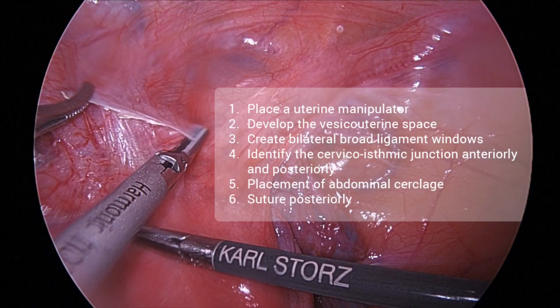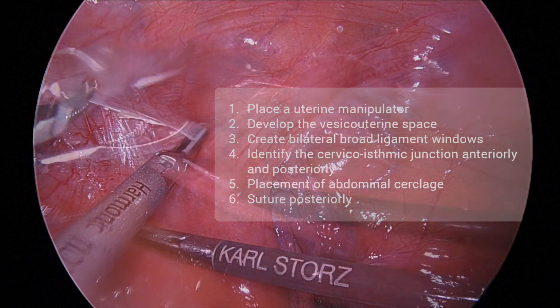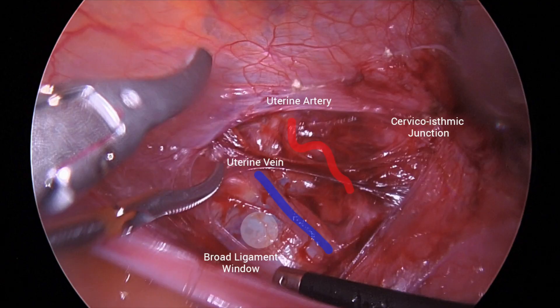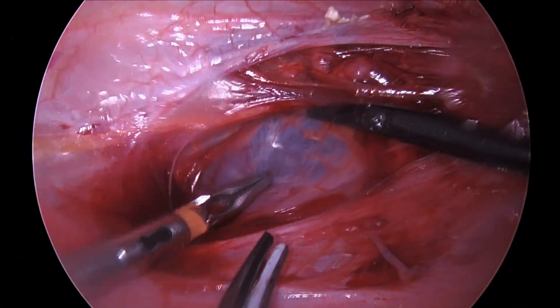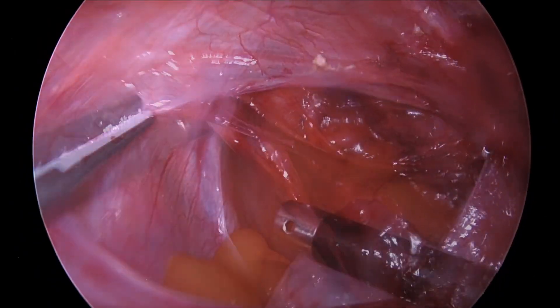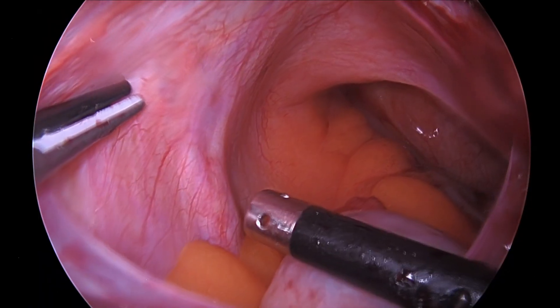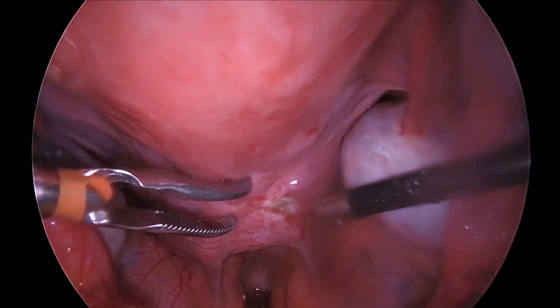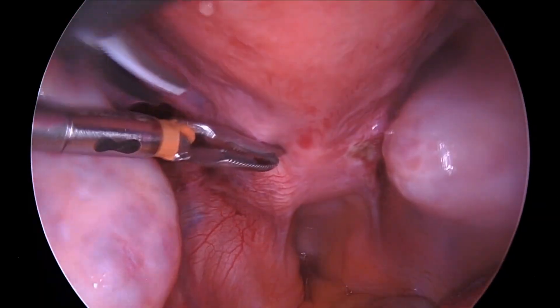We will recount the steps briefly and review specific considerations for surgical planning including timing of placement in relation to pregnancy and specific suture selection. The steps are: insertion of a uterine manipulator, followed by creation of a bladder flap, development of broad ligament windows, identification of the cervico-isthmic junction, and finally cerclage placement and suturing. The ureter is identified through the window created in the broad ligament, repeated on the contralateral side. A uterine manipulator during this procedure is essential to optimize the view of suture placement and identification of the cervico-isthmic junction.